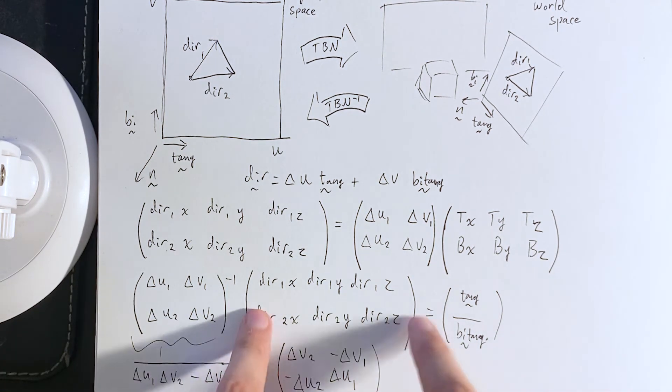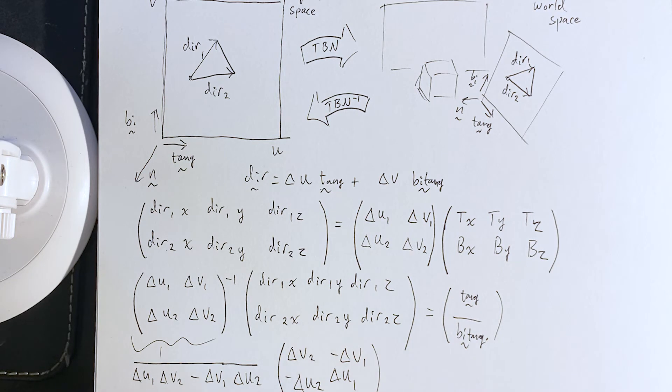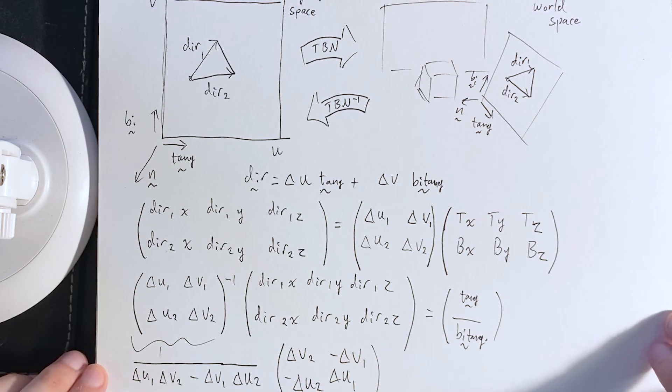Okay. Cool. So, we get the inverse multiplied by that, and that will give us the tangent and bitangent.